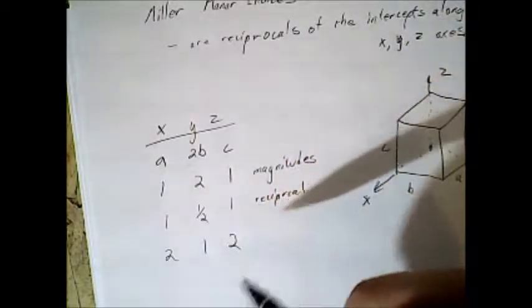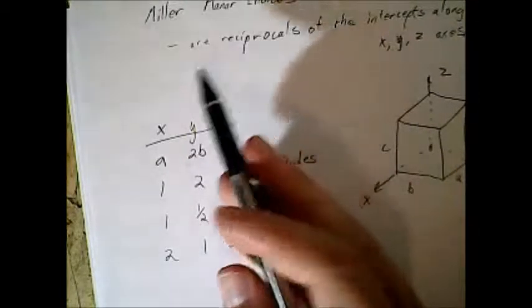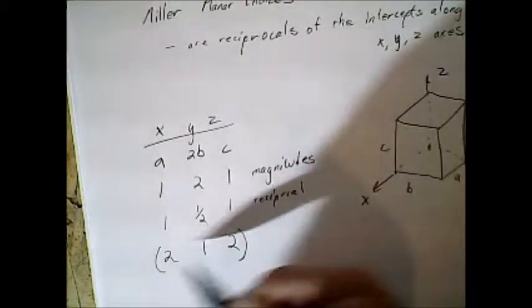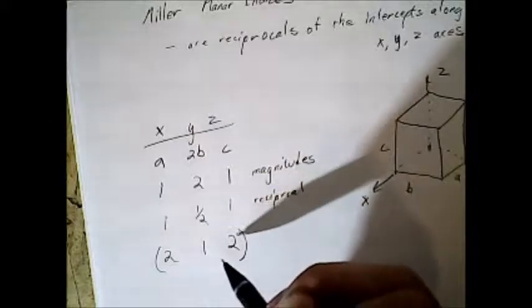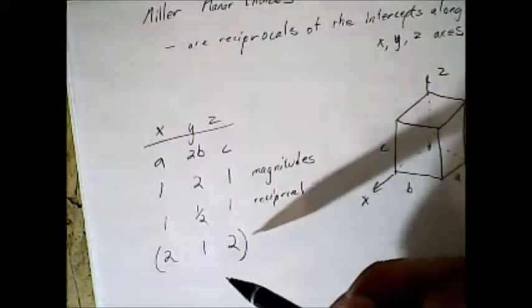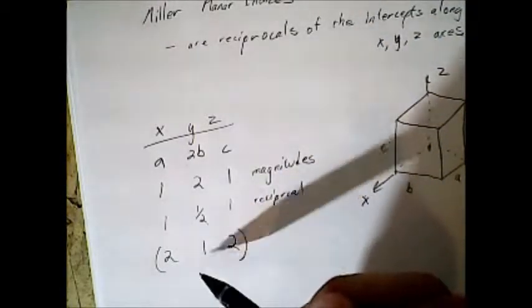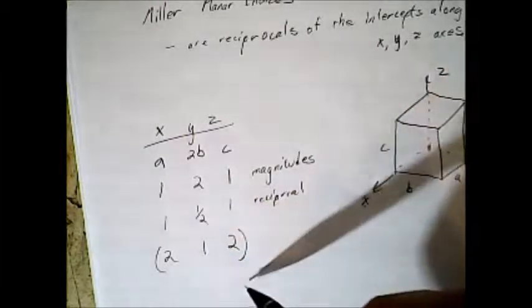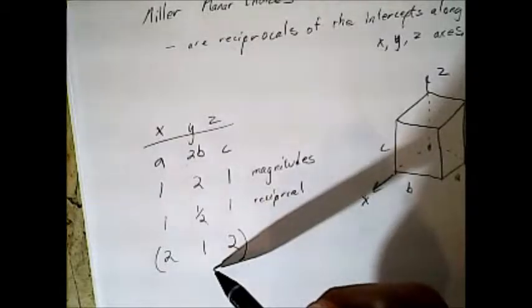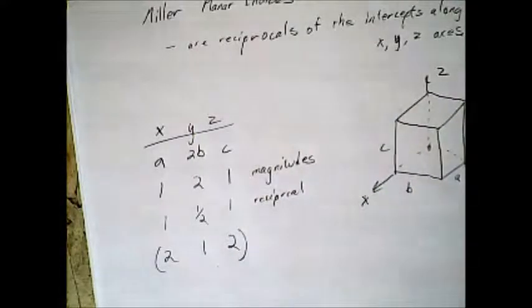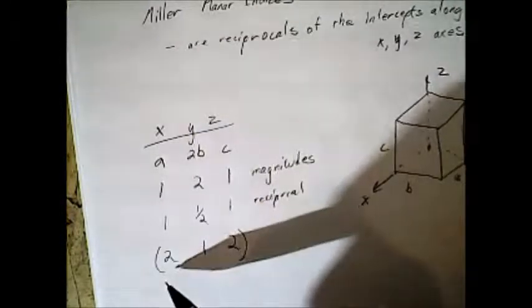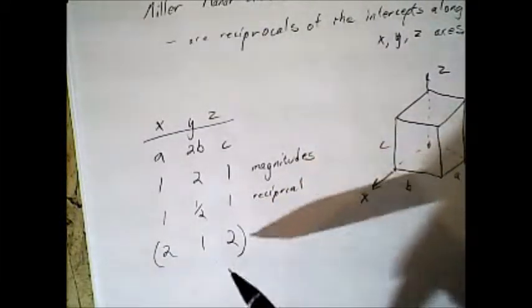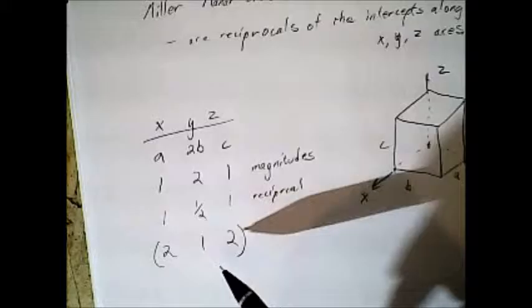And so for Miller planar indices, the way you denote this is with parentheses and no commas. If you watched one of my previous videos, point indices have parentheses and commas, but the way you differentiate between planar indices and point indices is whether there are commas or not. Planar has no commas, points do have commas. So these are the Miller planar indices.